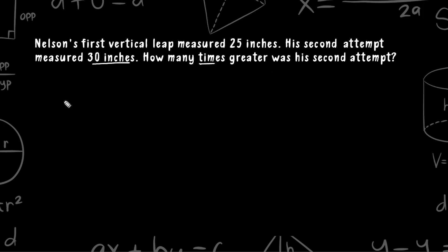So the first time Nelson had his vertical leap measured, he jumped 25 inches. And on the next attempt, he jumped 30 inches.